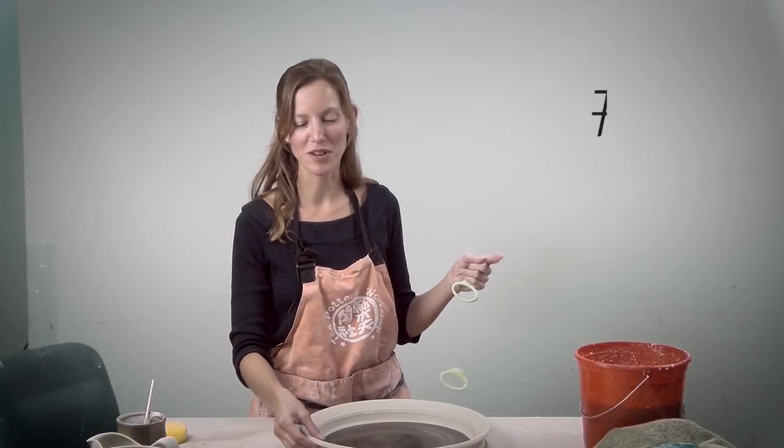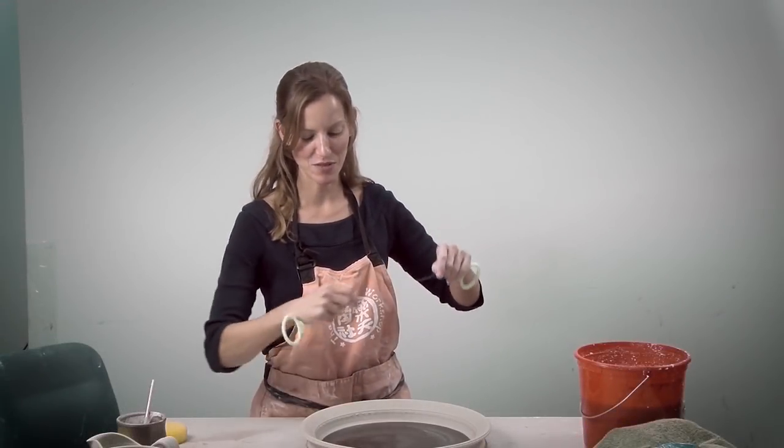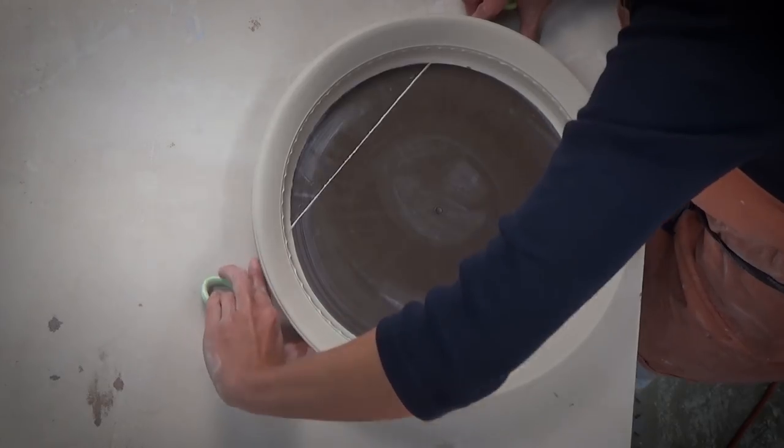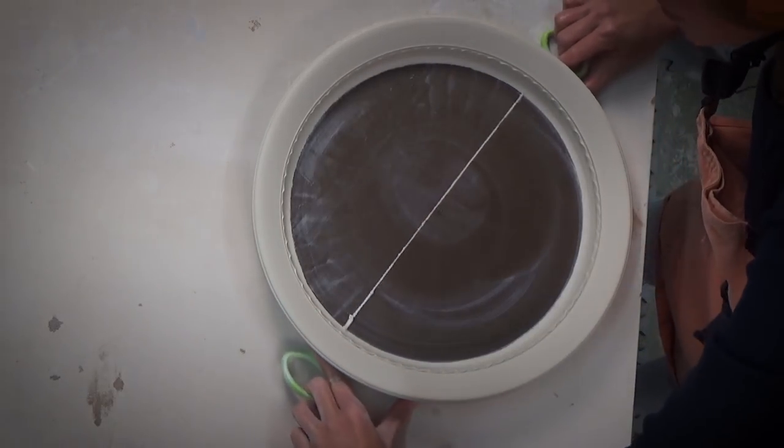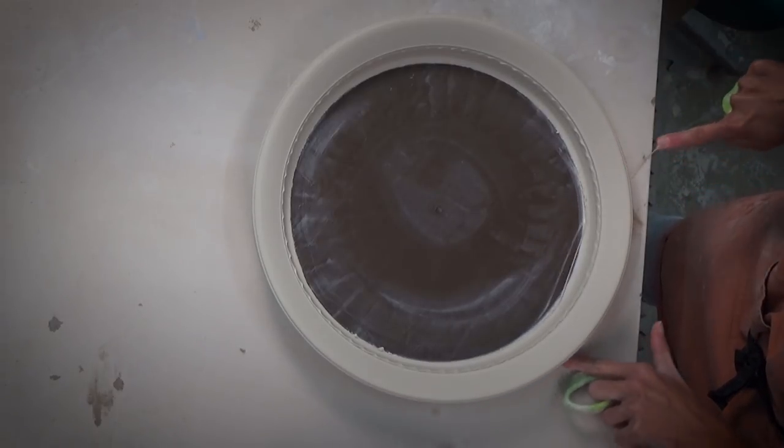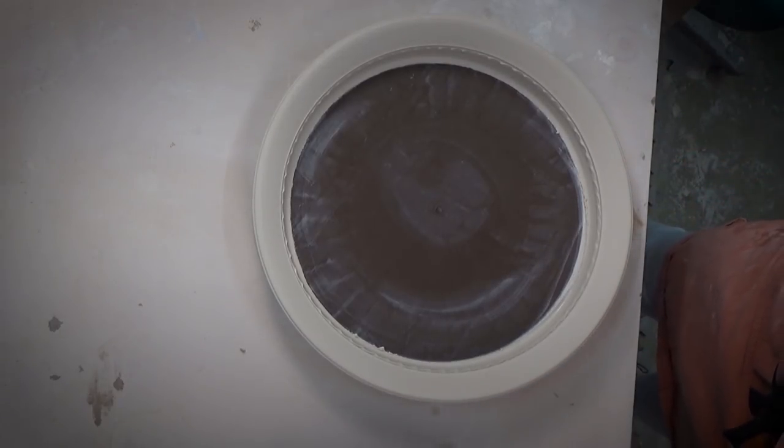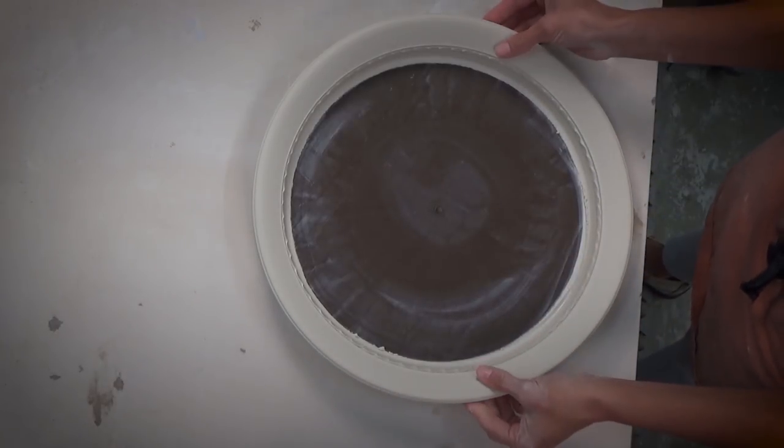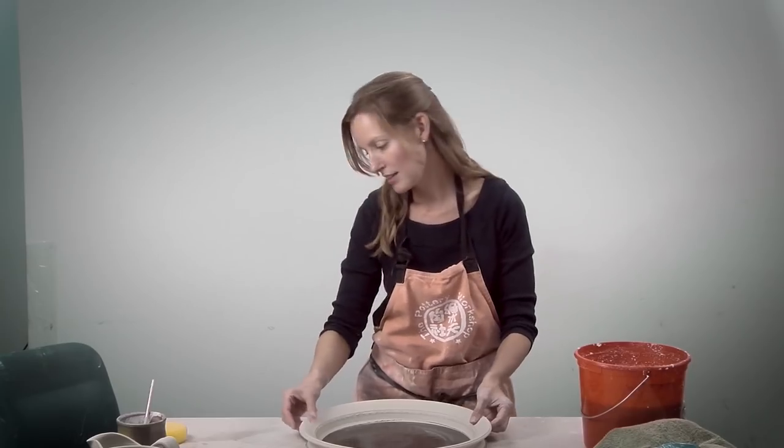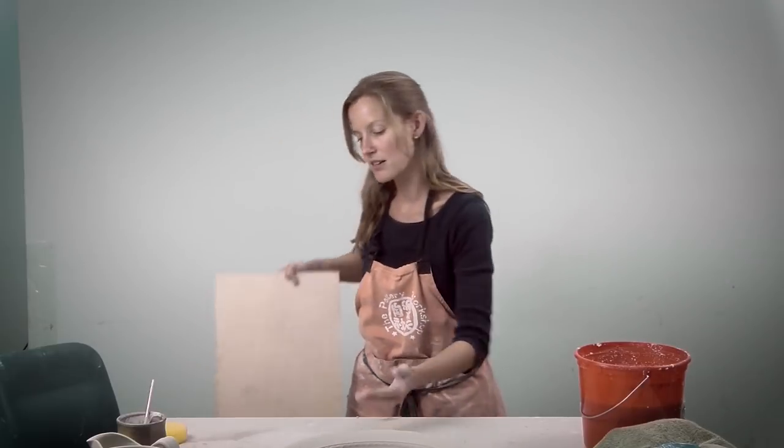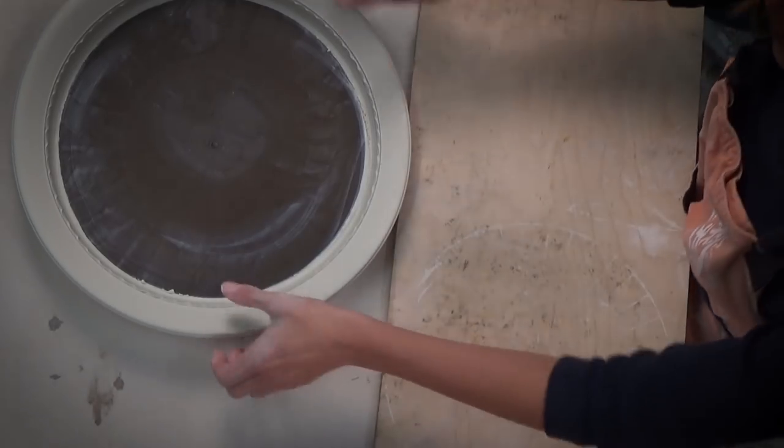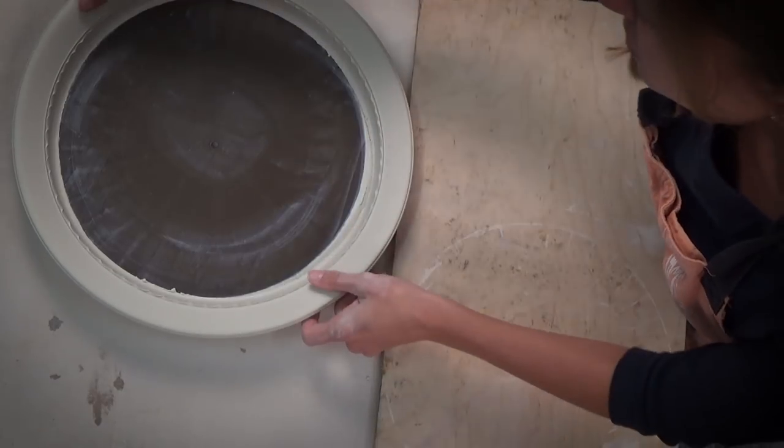This is our platter ring that we threw and it stiffened up. It's probably been about two hours since I threw it. I've left it uncovered. I'm going to pull that wire through. All the sheen is gone and we're going to set it on a board to stiffen up a little bit more.